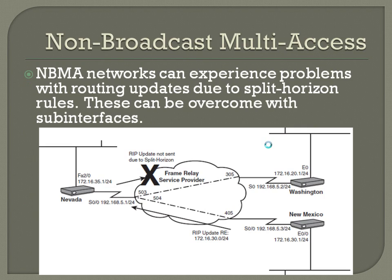Non-broadcast multi-access networks, or NBMA networks, can experience problems with routing updates due to the split horizon rules. These can be overcome with sub-interfaces. Split horizon means that if a router receives a routing update on an interface, it will re-forward that routing update but won't send it back out the interface it received it on — you don't want it sending routing information back to the router it learned from, or it will likely create a routing loop.